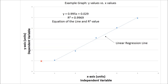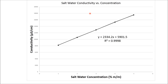Let's look at the actual graph you'll generate in the lab. It is titled 'salt water conductivity vs. concentration,' with the independent variable on the x-axis and dependent variable on the y-axis. Excel automatically generates the equation of the line y = mx + b, and an R-squared — in this case 0.9998 — meaning the curve fits the data well. You may get slightly different conductivities, but you should still achieve an R-squared of 0.99 or higher.